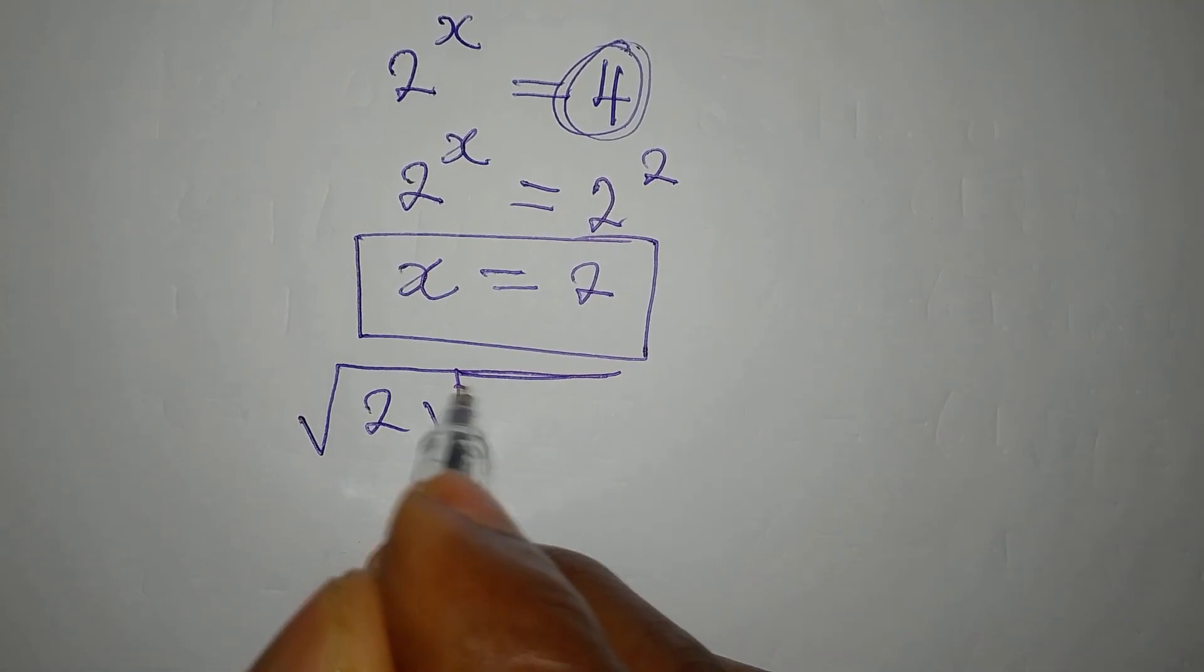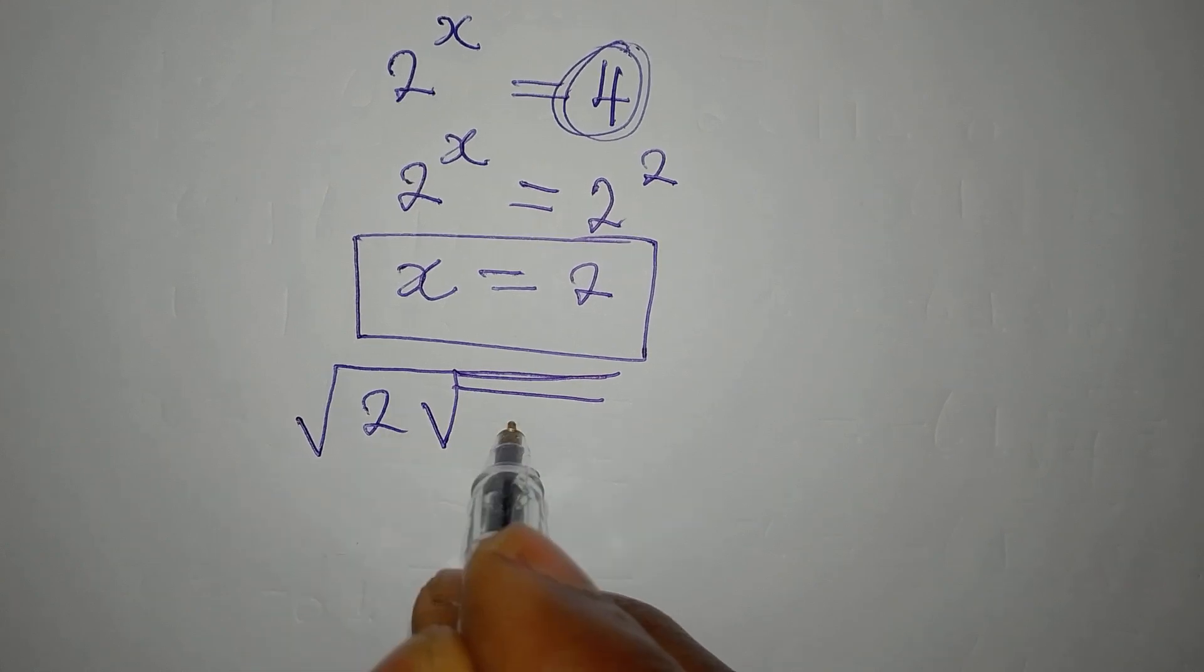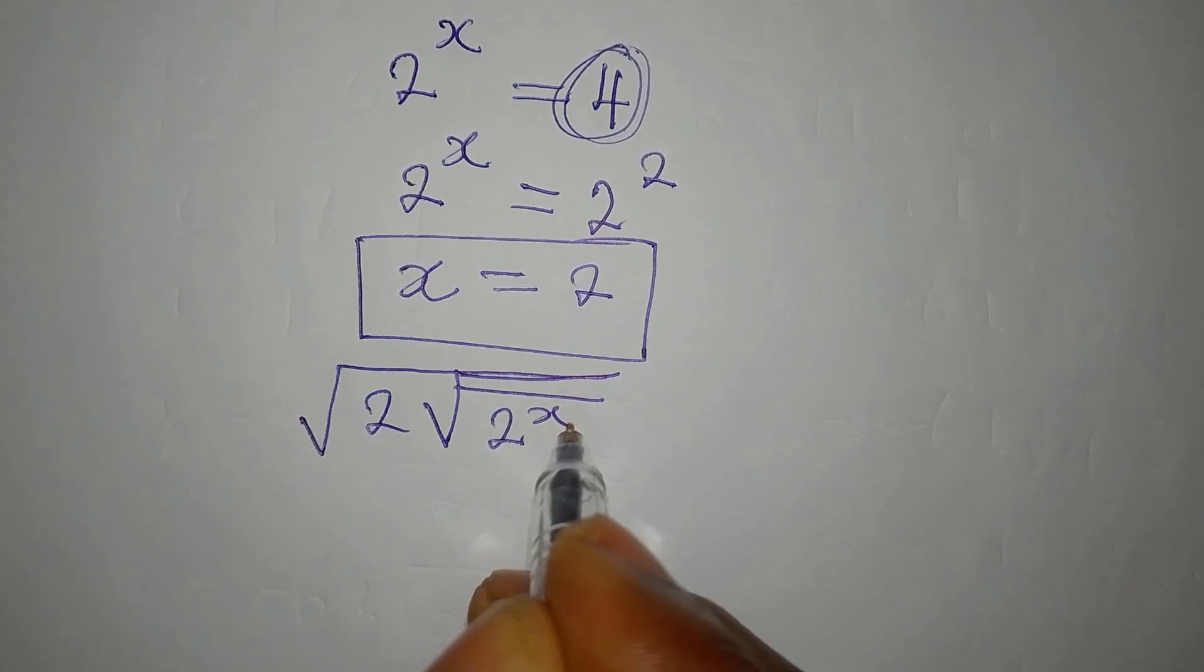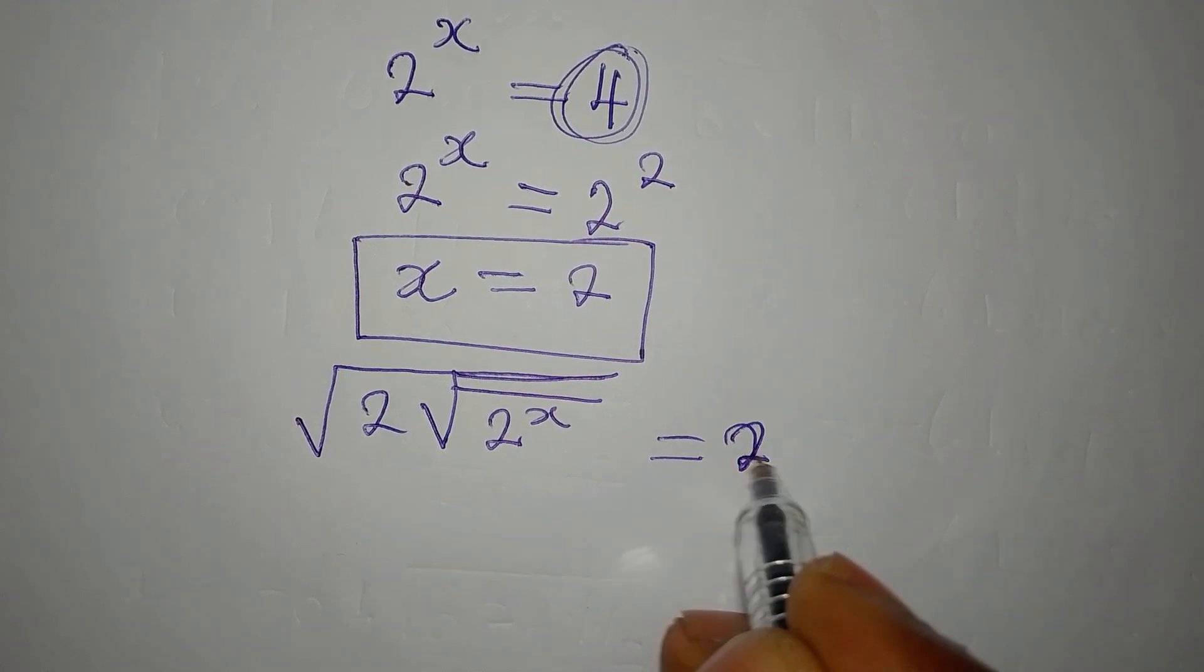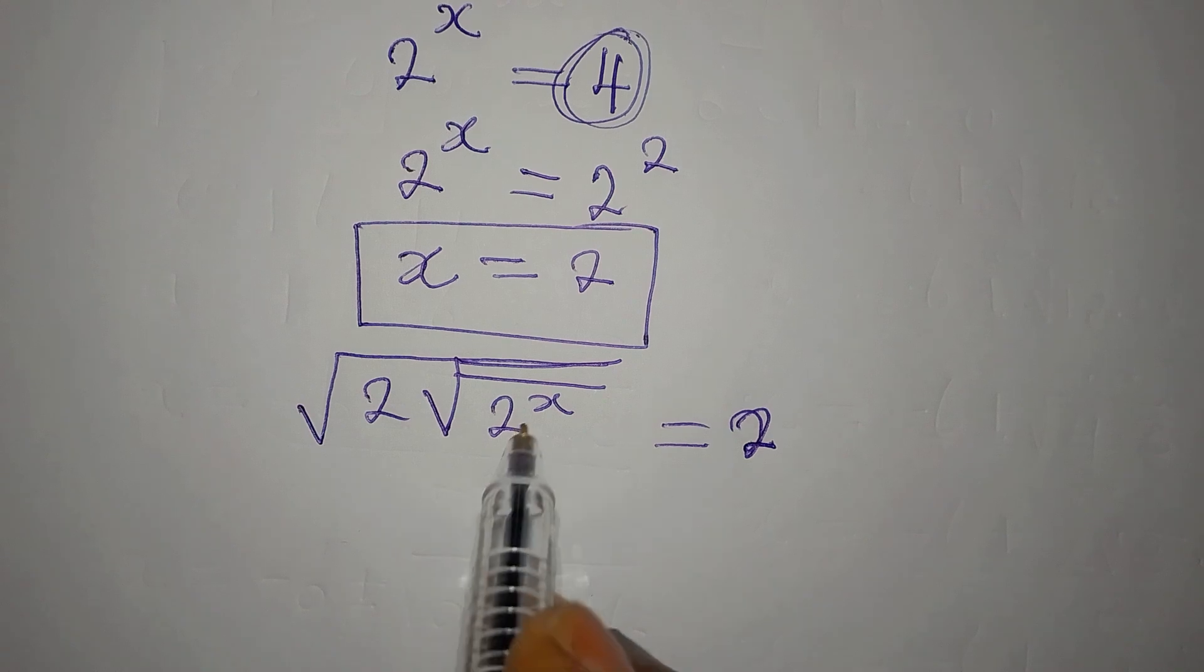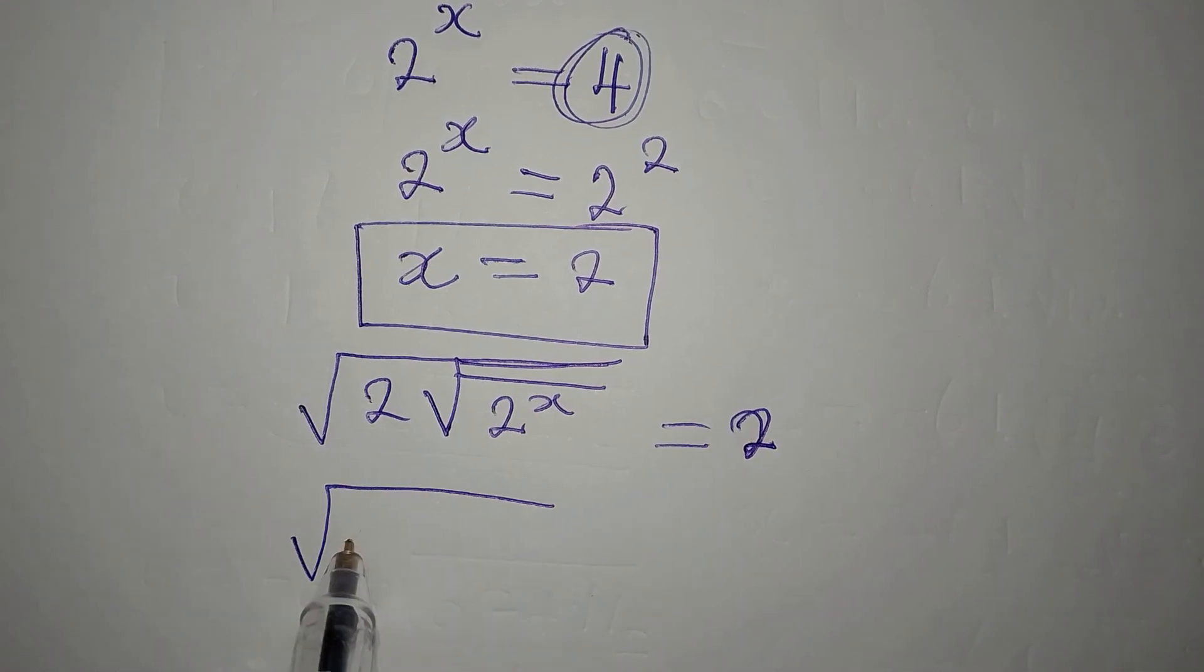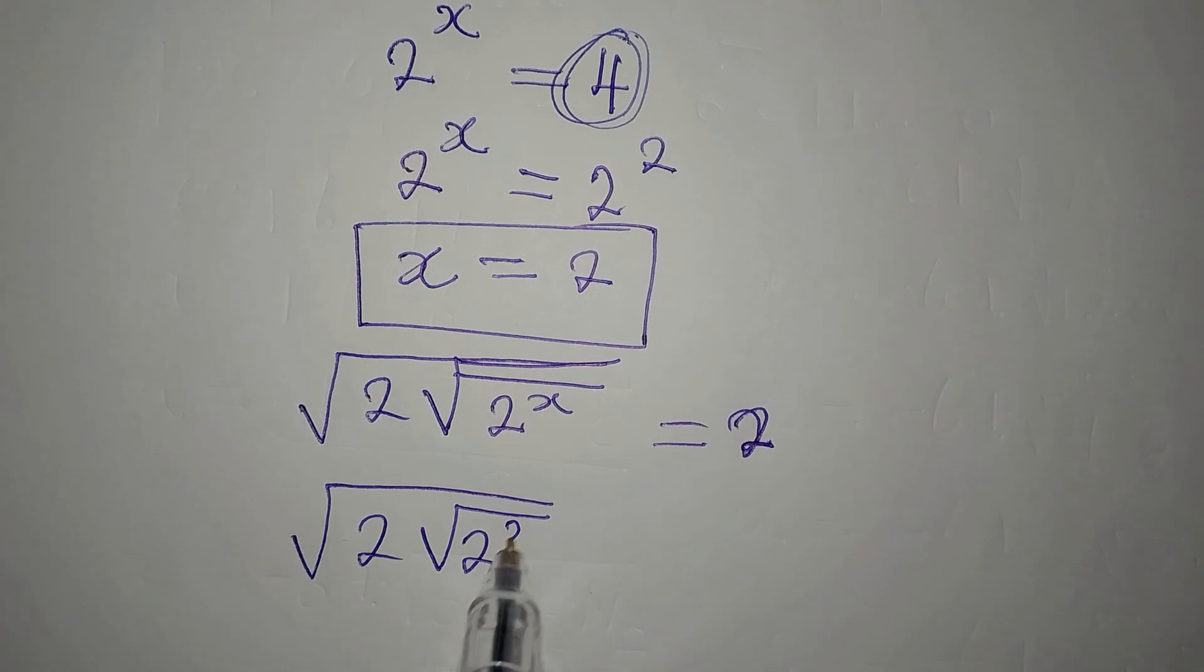The square root of the square root of 2 to the power of x equals 2. So now if we put 2 here, we're going to have the square root of 2, the square root of 2 to the power of 2.